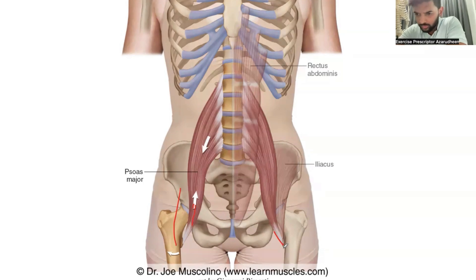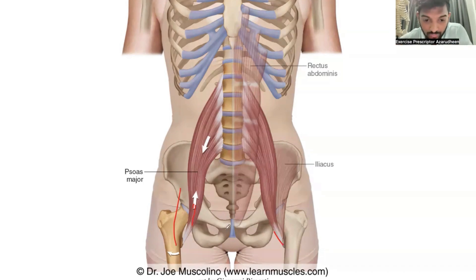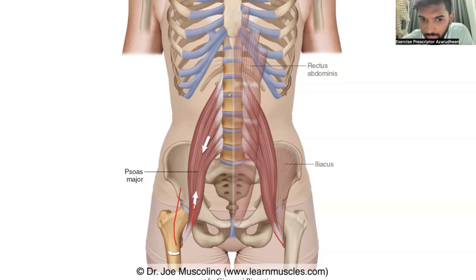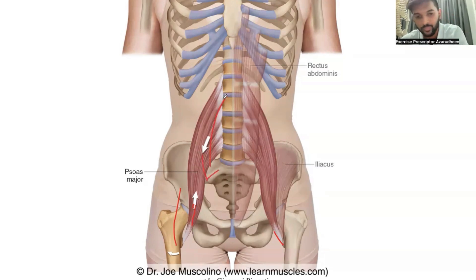Trunk flexion — excellent! So trunk flexion: if the distal part is stable and the proximal aspect moves, it's attaching the vertebral part — the anterior part of the vertebra. It pulls down and flexes the trunk. Yes, good job, excellent! I'm very happy — we're doing well.